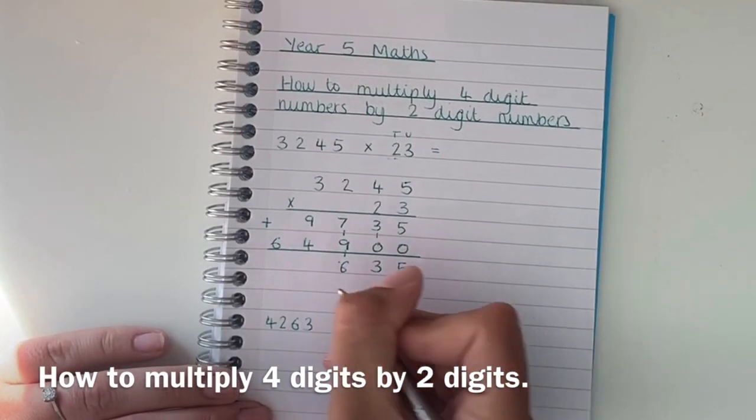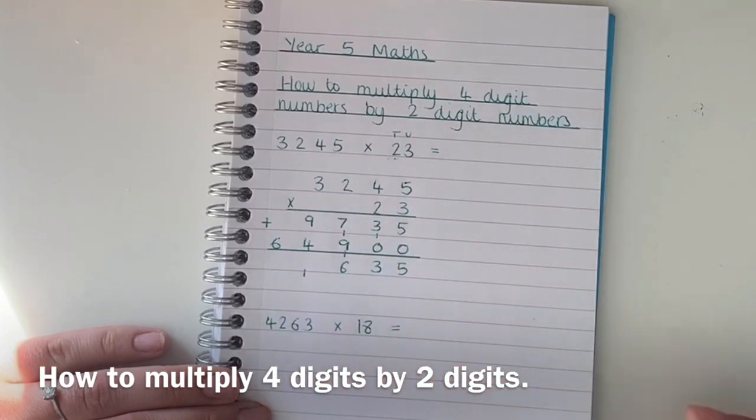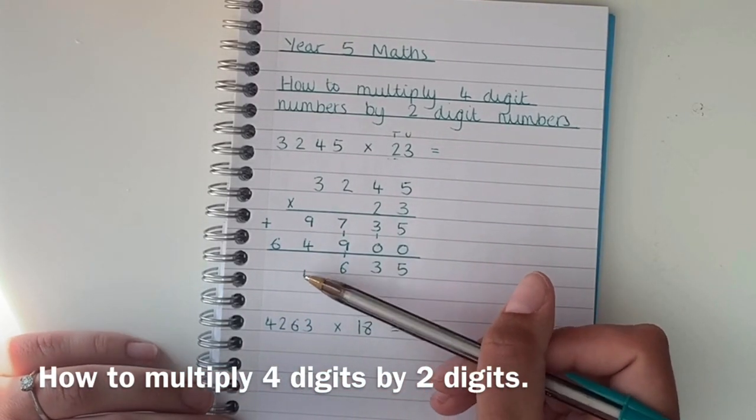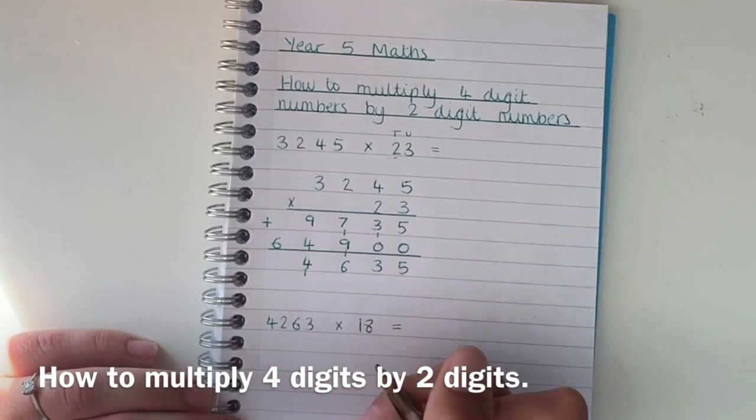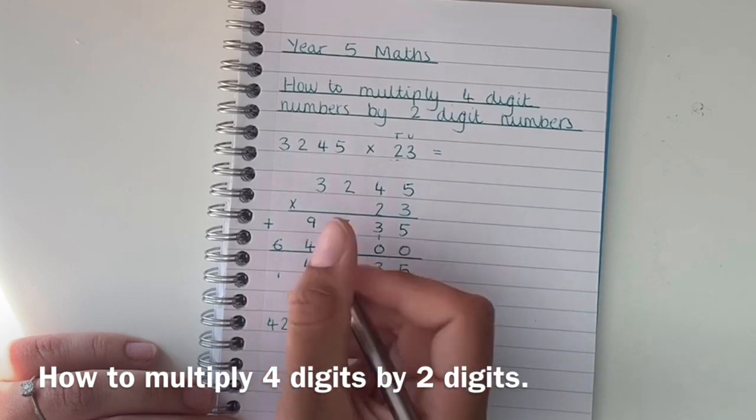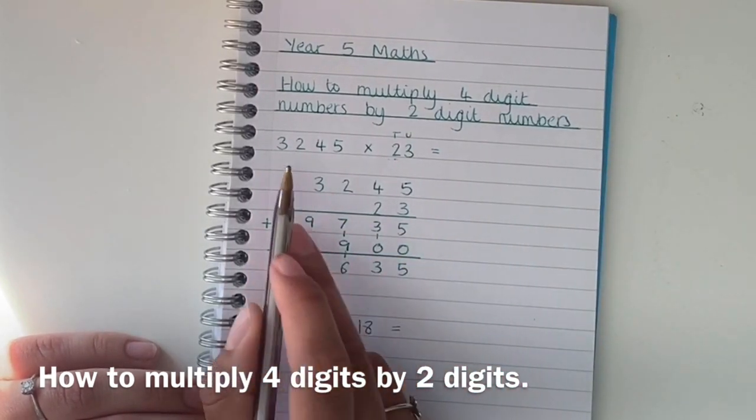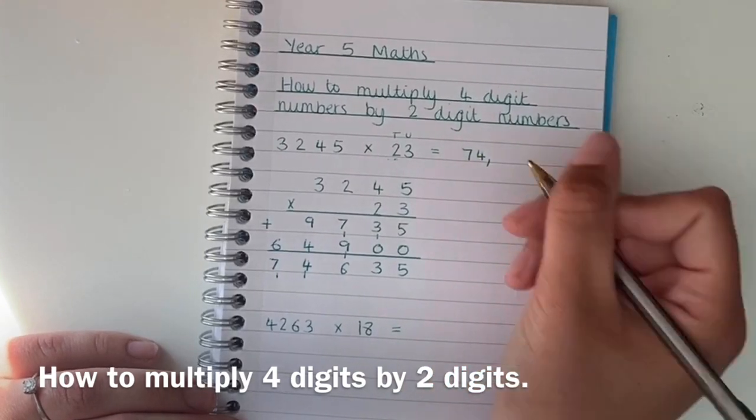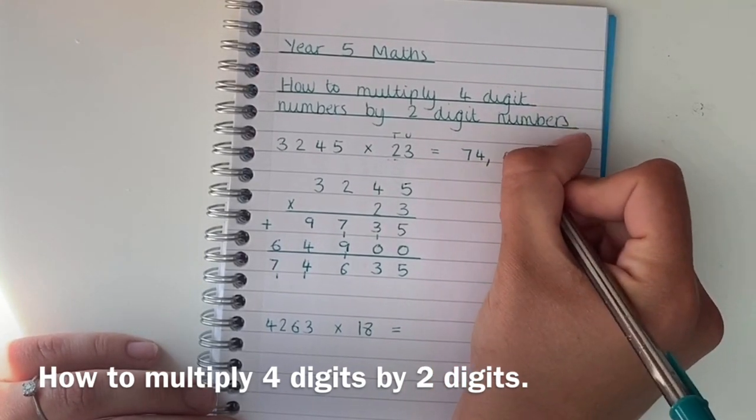So you put your 6 and you carry that 1 over. 9 add 4 is 13 but we need to remember to add that. So it would be 14, put the 4, and 6 add your 1 would be 7. So my answer to this number would be 74,635.